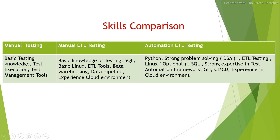ETL tools are also important — you need to understand at least one ETL tool, for example Informatica, Pentaho, or Clover. Any tool that handles data; there are a lot of tools in the market. Knowledge of one tool is important because you need to know the different processes and transformations supported by those tools. Data warehousing concepts are important because most ETL systems are built around data warehousing. Data pipeline knowledge is also key — how jobs are dependent on each other and how data flows from one system to another.